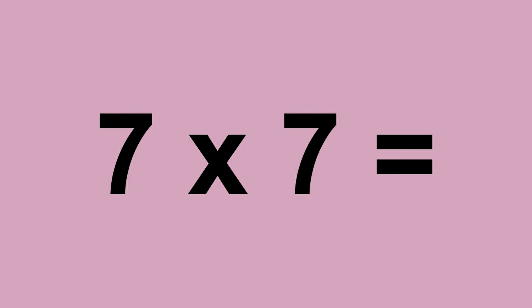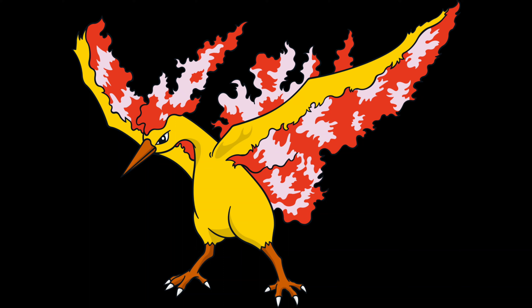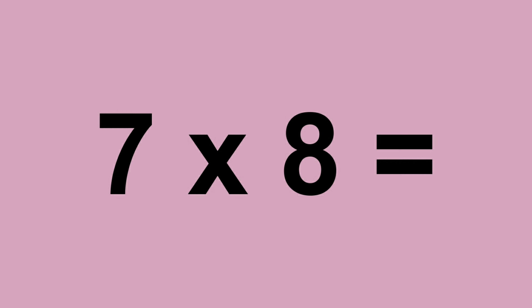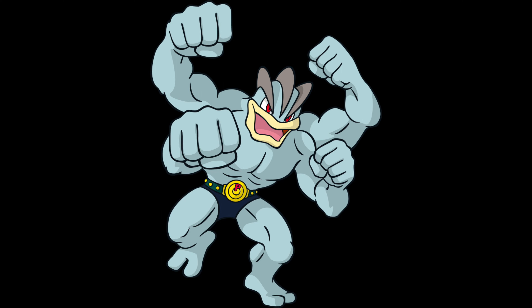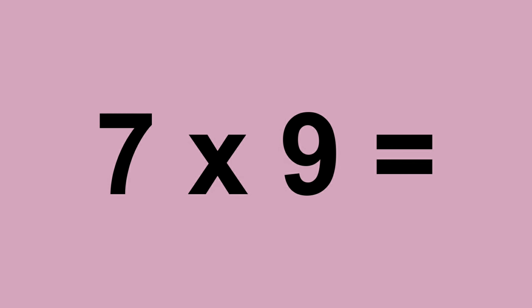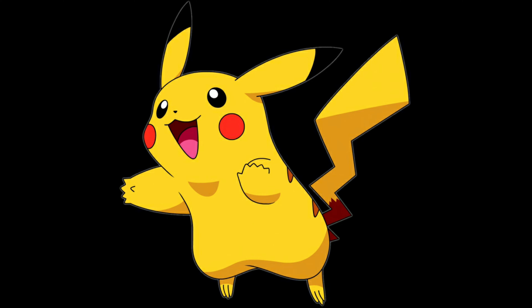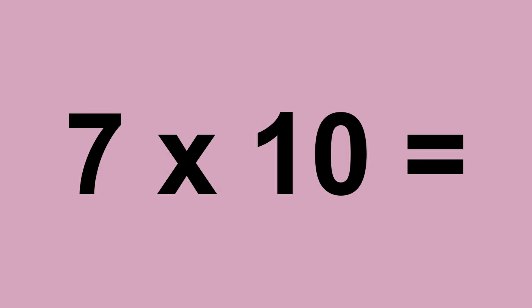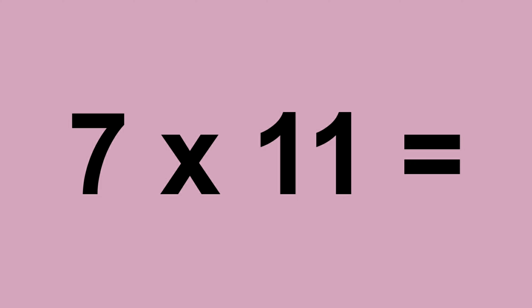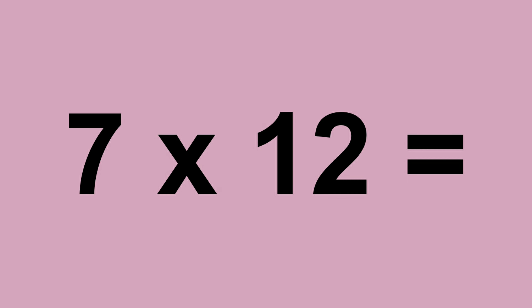Seven times seven equals forty-nine. Seven times eight equals fifty-six. Seven times nine equals sixty-three. Seven times ten equals seventy. Seven times eleven equals seventy-seven. Seven times twelve equals eighty-four.